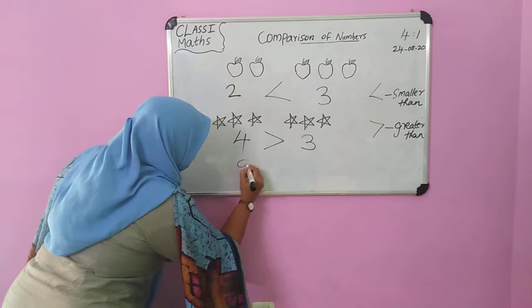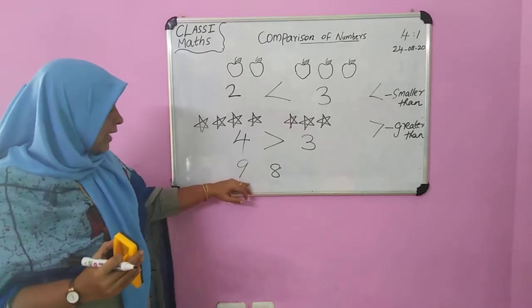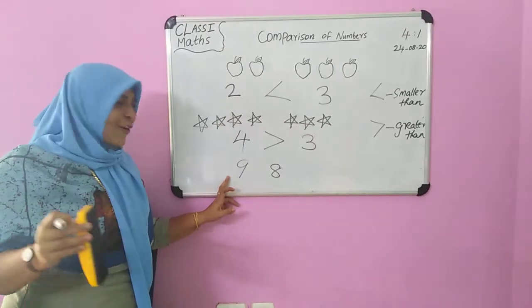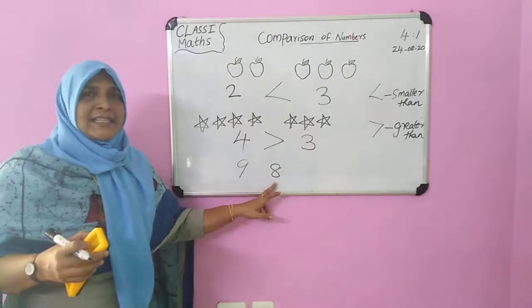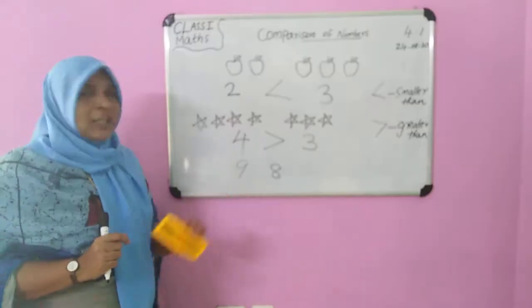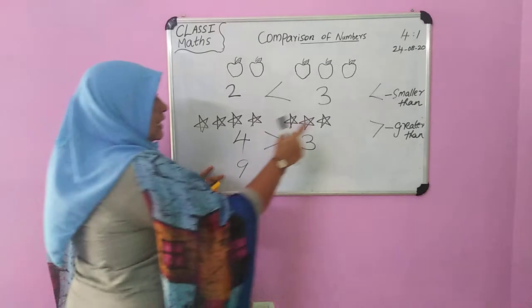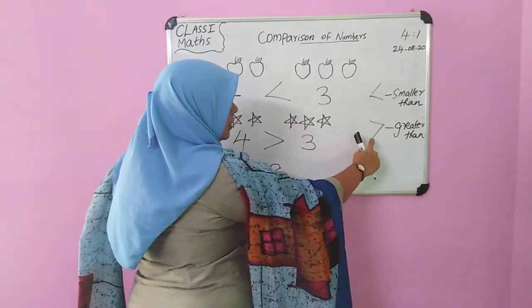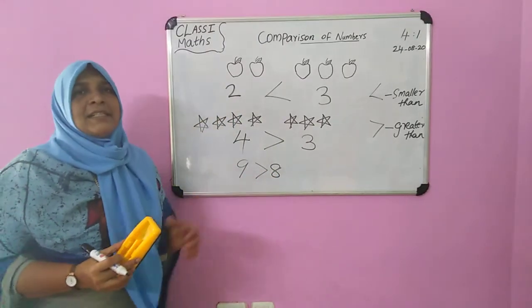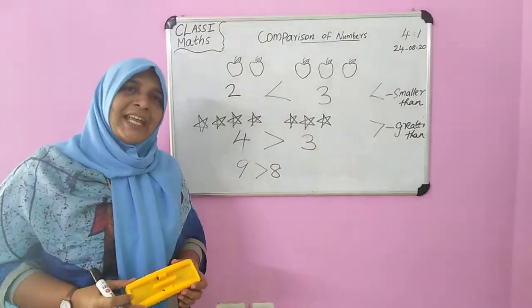In the given numbers nine and eight, which number is greater and which number is smaller? Nine is greater than eight. We put this symbol — nine is greater than eight. Children, take your textbook and do your exercise. That's all for today. Thank you.